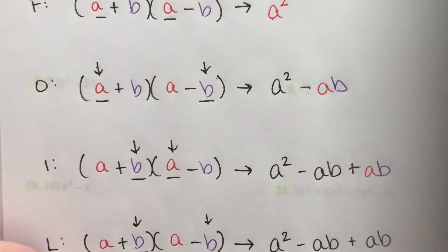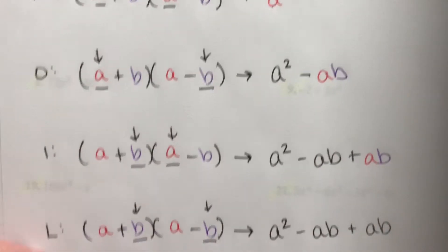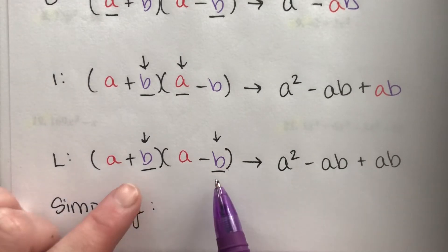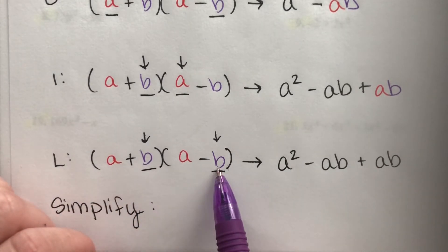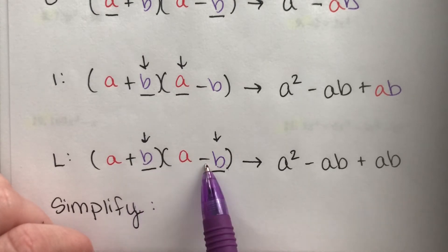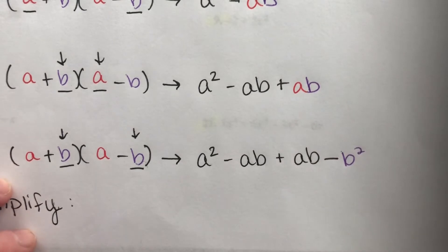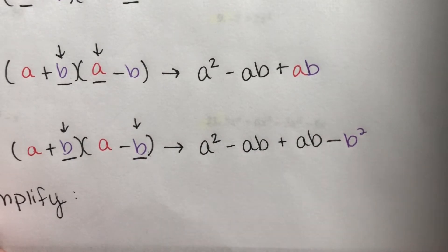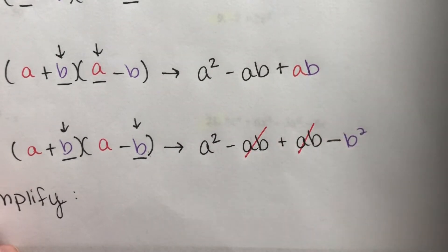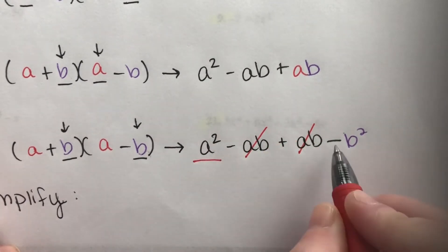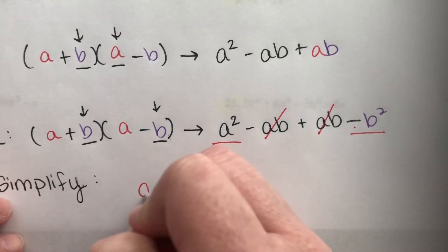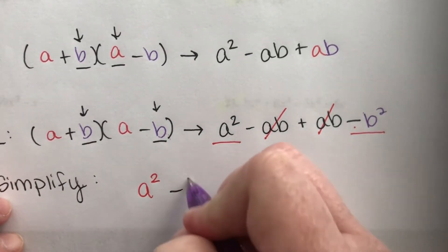Our middle two terms are exact opposites — they cancel each other out. The last step in FOIL: positive b times negative b gives us -b². So when we simplify, -ab plus +ab equals zero, and we're left with a² - b².